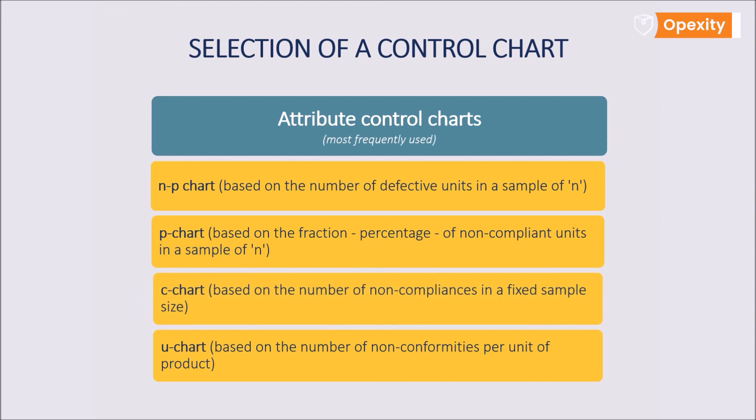C chart, such charts are based on the number of non-conformities in a fixed sample size. Per batch, per shift, per day, per machine, etc. With quality defects being rare, less than 5%.